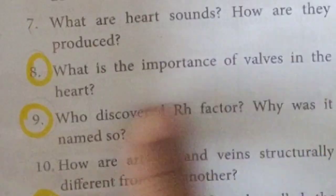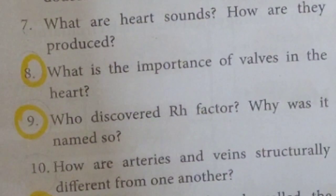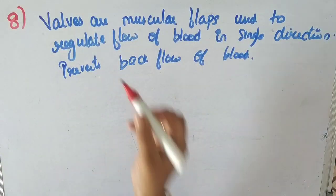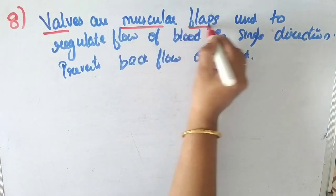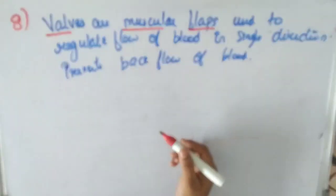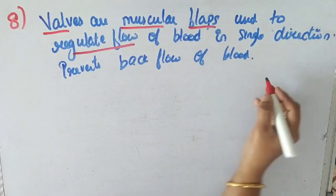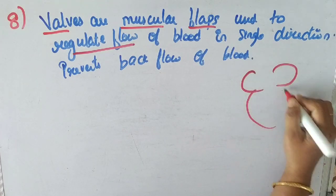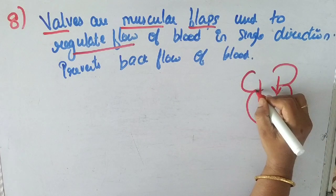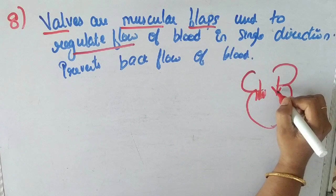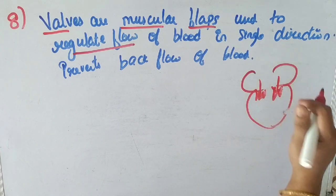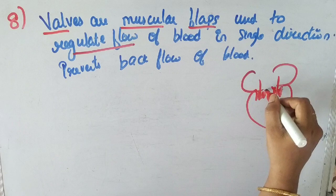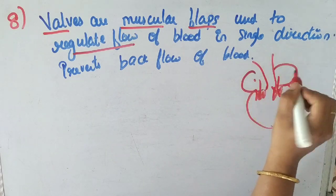What is the importance of the valves in the heart? There are valves — the bicuspid and tricuspid valves. These valves are muscular flaps that regulate blood flow and prevent backflow, directing blood from the auricles into the ventricles and onward to the pulmonary artery.